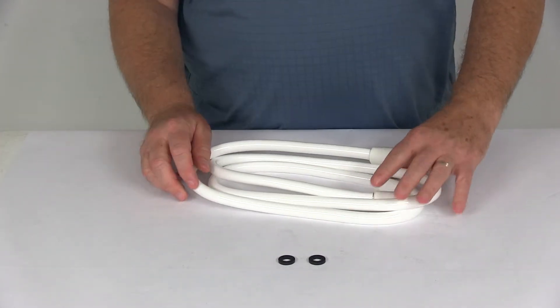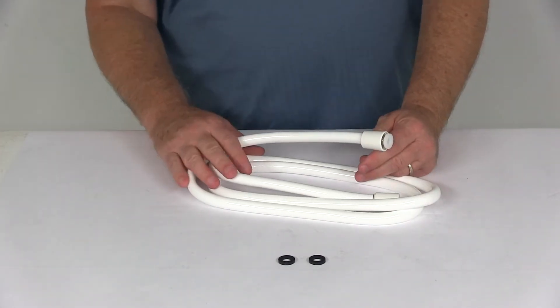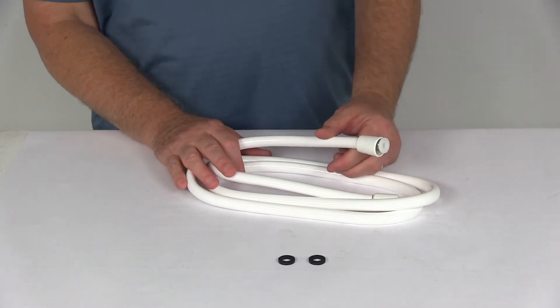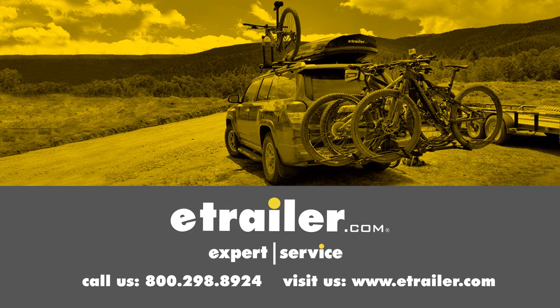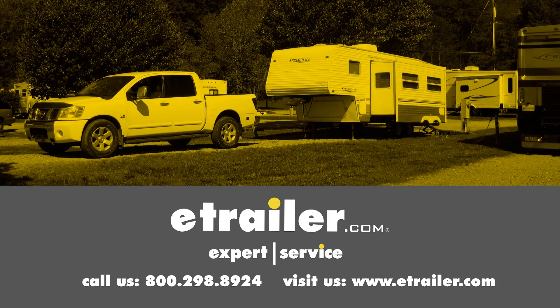But that should do it for the review on the 72-inch white nylon replacement hose for Phoenix Faucet handheld shower kits. Click the link below to shop, learn more, or visit us at eTrailer.com.